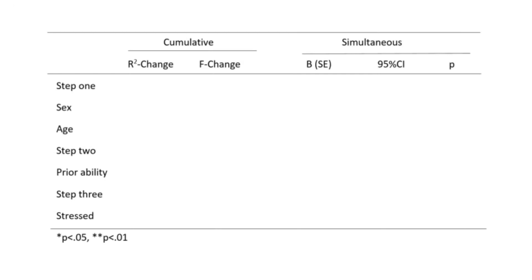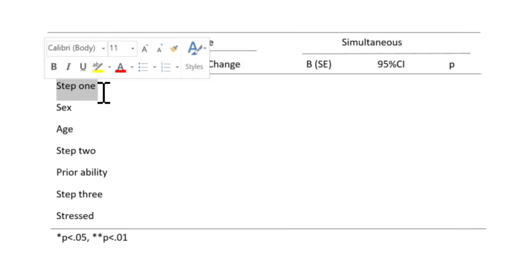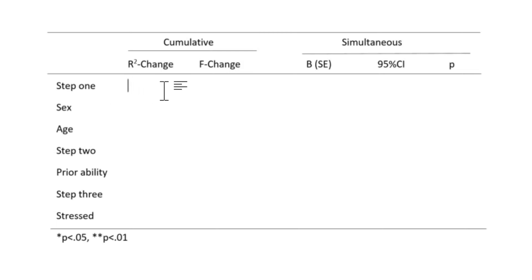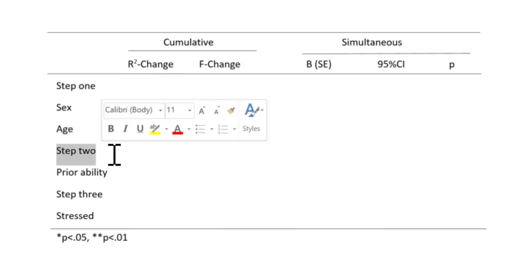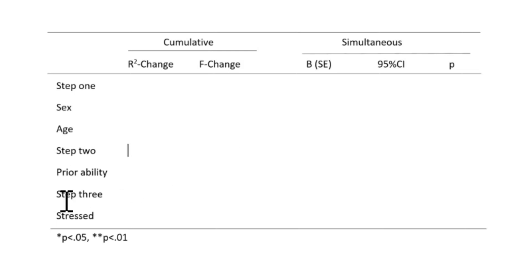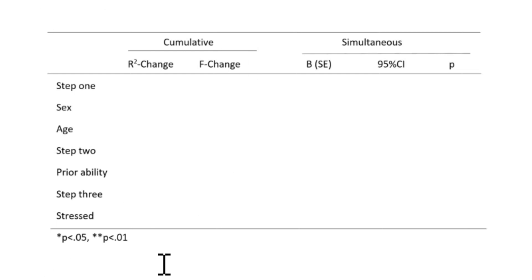What we're going to do is fill in this table. You can see I've got two sets: cumulative and simultaneous. We've got R-squared change and F-change statistics, and these are going to be put next to step 1, step 2, and step 3 - each with their R-squared change and F-change. The simultaneous model is just our regression coefficients, confidence intervals and p-values, and I'll deal with that at the very end.